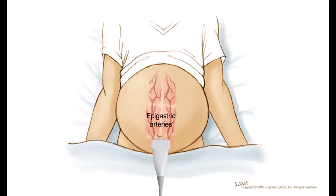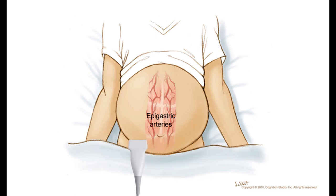How do you actually do it? While using a high-frequency linear transducer, place the probe transversely just below the umbilicus. Slowly move the probe laterally to the side of the planned needle entry. Commonly, you will identify the inferior epigastric artery as a round hypoechoic vessel flanked by two veins just superficial to the peritoneum.